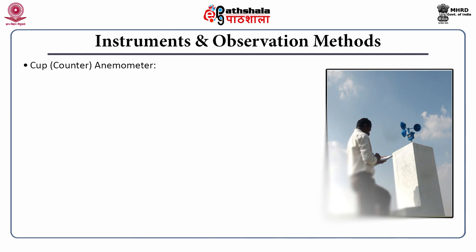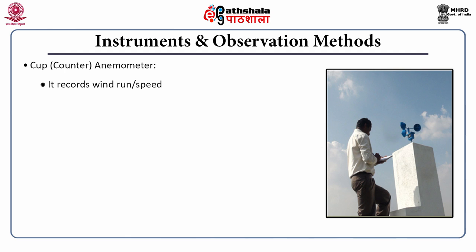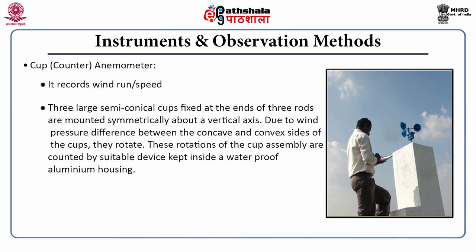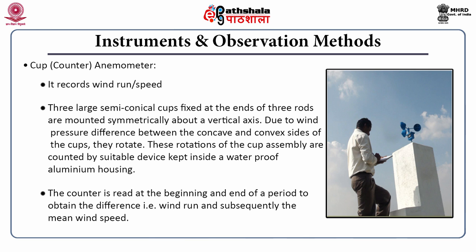Next comes the cup anemometer, which records wind run. There are three large semi-conical cups fixed at the ends of three rods, mounted symmetrically about a vertical axis. Due to the wind pressure difference between the concave and convex sides of the cups, they rotate. These rotations of the cup assembly are counted by a suitable device kept inside a waterproof aluminum housing. The counter is read at the beginning and end of a period to obtain the difference, that is the wind run. Dividing wind run by the time period gives mean wind speed.